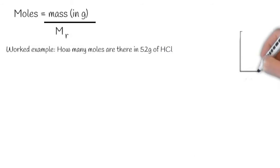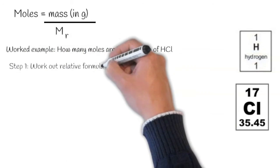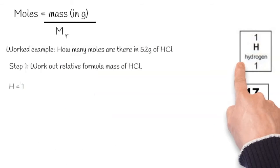Let's do another one. How many moles are there in 52 grams of HCl? Well, we know that HCl is made up of hydrogen and chlorine, so we need to find these on the periodic table, and then work out the relative formula mass of HCl.